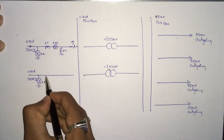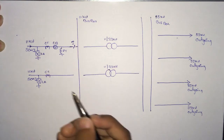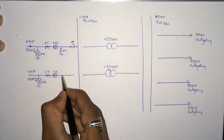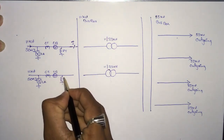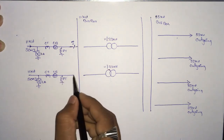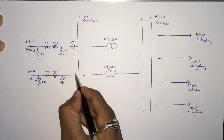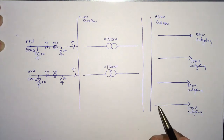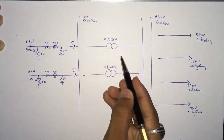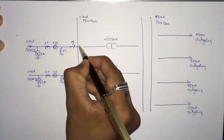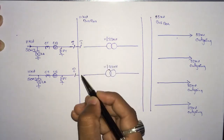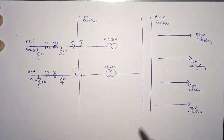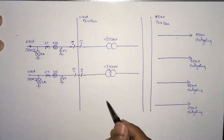Similarly for the second incoming line: LA lightning arrester, CT current transformer in series, CB circuit breaker in series, and PT potential transformer in parallel. Make sure the incoming line is connected to the bus bar with an isolator, not directly. After the bus bar, before connecting to the transformer line, make sure an isolator is placed between the bus bar and the line.